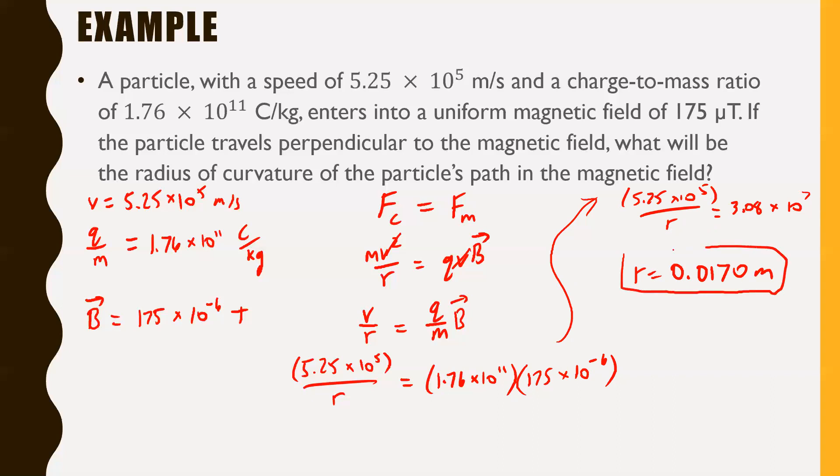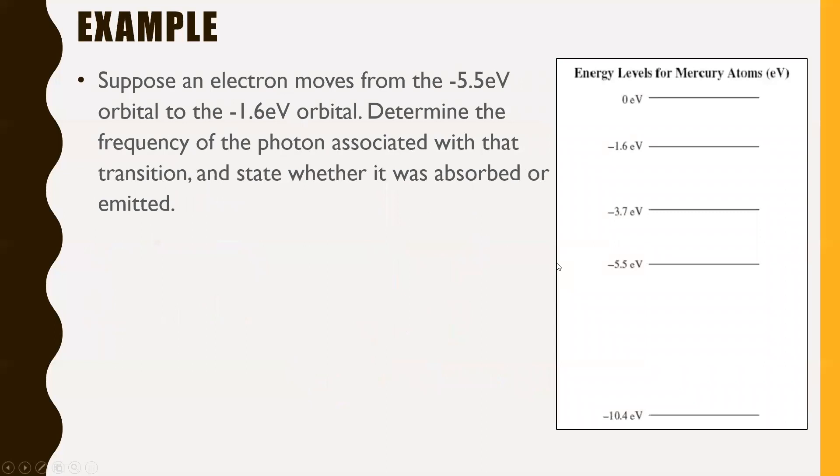Long story short, you're going to get r = 0.0170 meters, that's three sig figs. But I think it might be better to put it as centimeters, so r = 1.70 centimeters. There we go, good to go. Hopefully you were able to get that one. It just comes down to setting your Fc equal to your Fm.